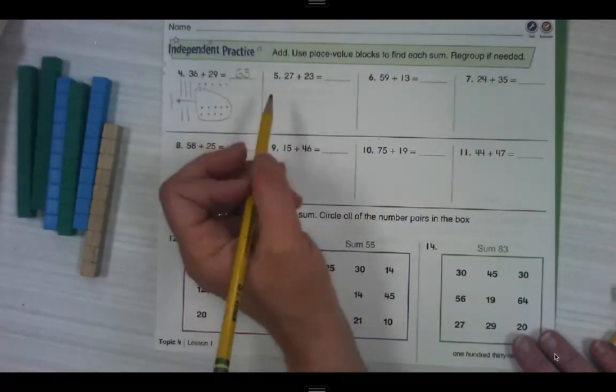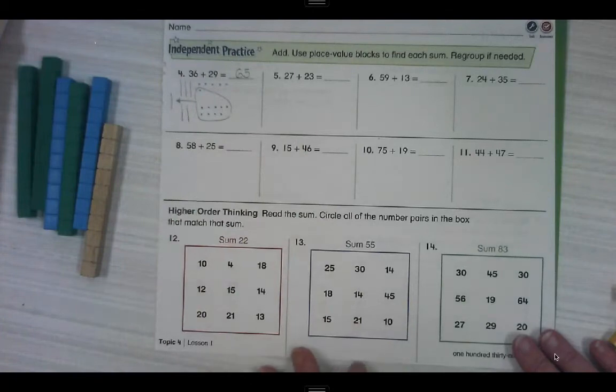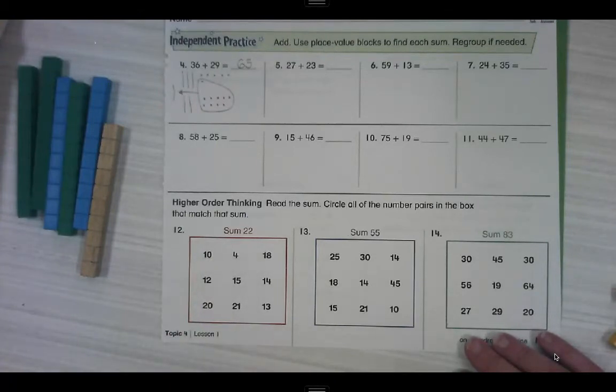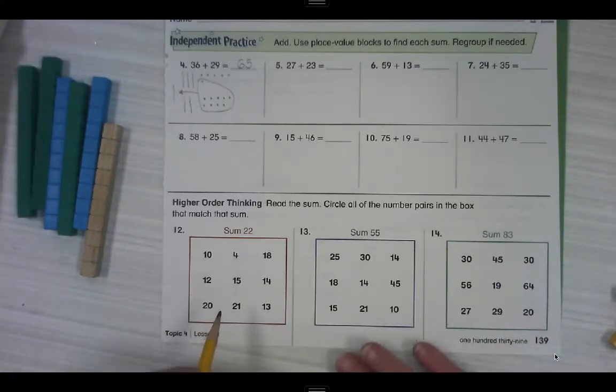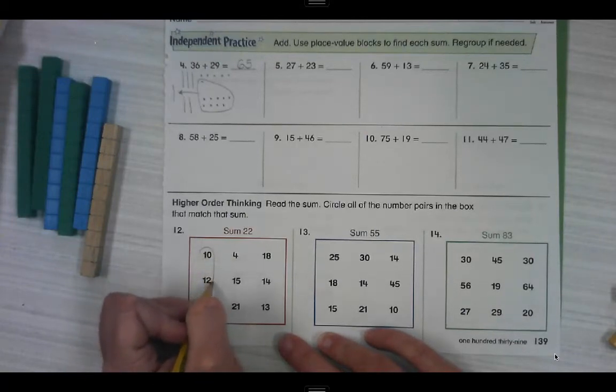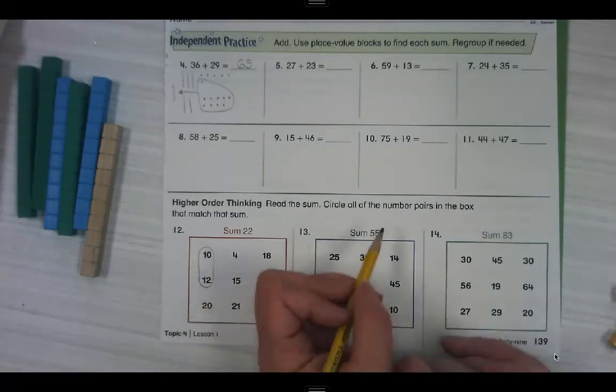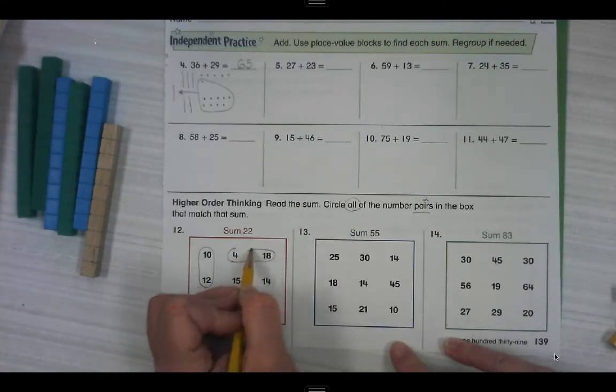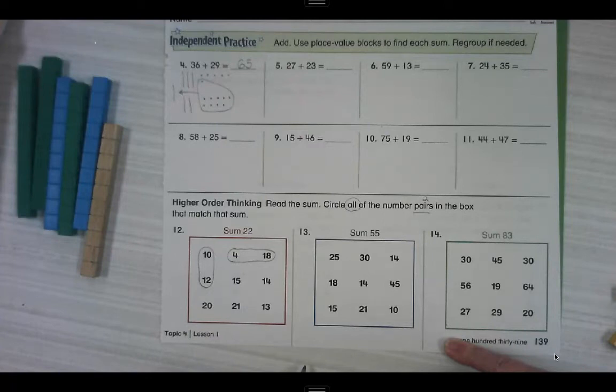You do it next. Make sure to give yourself space. Down here for number 12, 13 and 14, it says, read the sum, circle all of the number pairs in the box that match that sum. So to equal 22, we could do 10 plus 12. Now this says number pairs. How many are in a pair? And it says circle all of them. It doesn't say there's just one. 4 plus 18 is also equal to 22. You think there are any more? I don't know.